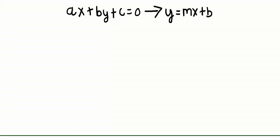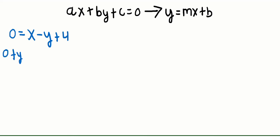Now we're going to be converting standard form to Y equals MX plus B. Let's look at an example like X minus Y plus 4 equals 0 and convert it to Y equals MX plus B. The first thing you have to do is isolate the Y variable. Since we're subtracting Y, we add Y on both sides: 0 plus Y equals X minus Y plus Y plus 4, which gives us Y equals X plus 4. We don't have to worry about A, B, and C because our equation is already in Y equals MX plus B.